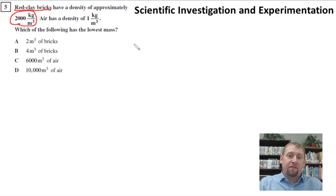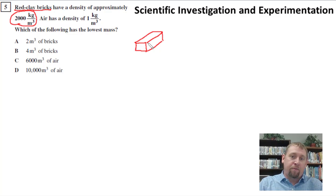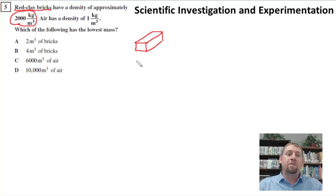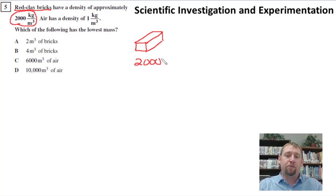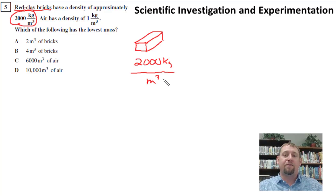So this is nothing fancy here — these are the red clay bricks you would see anywhere in the world. Made out of clay, they're pretty dense and heavy. They're saying if I have a meter cubed of these, which is quite a large amount, they have a mass of 2,000 kilograms per every meter cubed. Pretty dense stuff, pretty heavy.